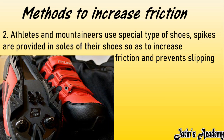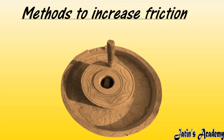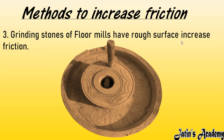Third method to increase friction: grinding stones of floor mills have rough surfaces. The rough surface increases friction between the wheat and the grinding stone. More friction means more force is required, and this greater force crushes the wheat into fine powder more easily. That is why grinding stones are deliberately made rough.